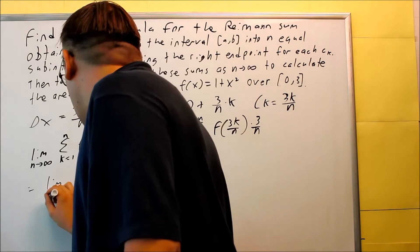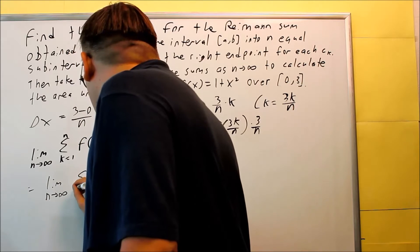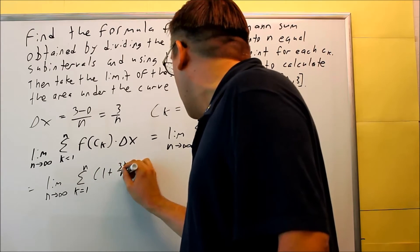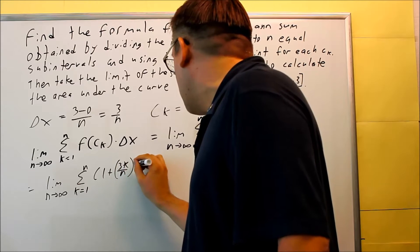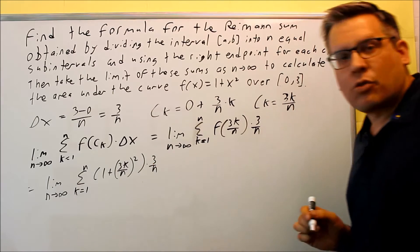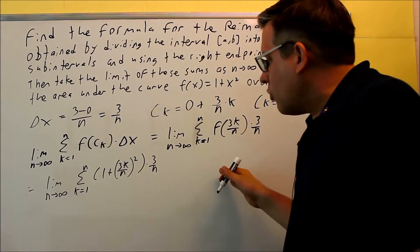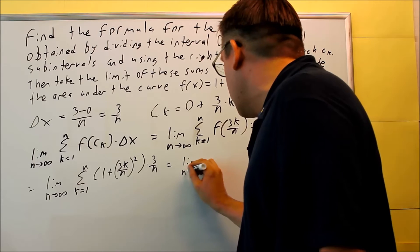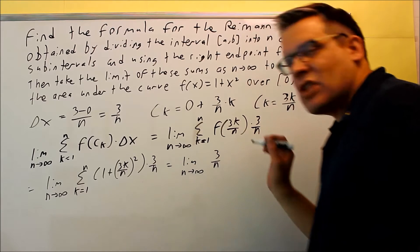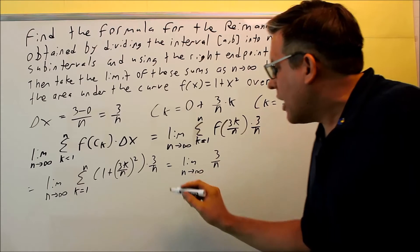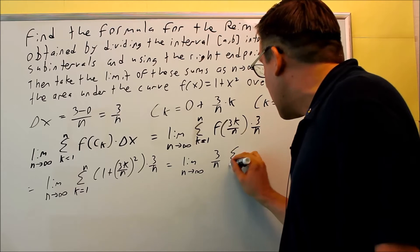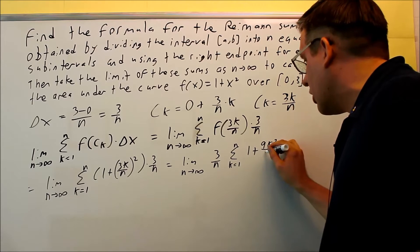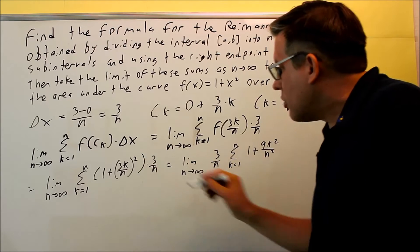So the new expression is: limit as n goes to infinity, summation k equals one to n of (1 + 3k/n) squared, multiplied by 3/n. At this point, you can take the 3/n and move it outside of the summation — you don't have to, but it might make things easier. Then we just deal with what's inside: (1 + 9k²/n²) when we distribute the square across the top and bottom.